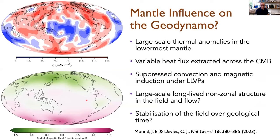That brings me more or less through my whistle-stop tour of what we've been doing and what we've found. We've been interested in whether there's a large-scale influence of the thermal anomalies in the mantle on the CMB. In the simulations, there's definitely suppression of convection under those thermal anomalies, and hence in the magnetic field. These anomalies are very long-lived and large-scale, so we would expect a long-lived, large-scale non-zonal structure in the flow and field — there is some observational evidence for this. We have an article out in Nature Geoscience earlier this year. I'm happy to take any questions.